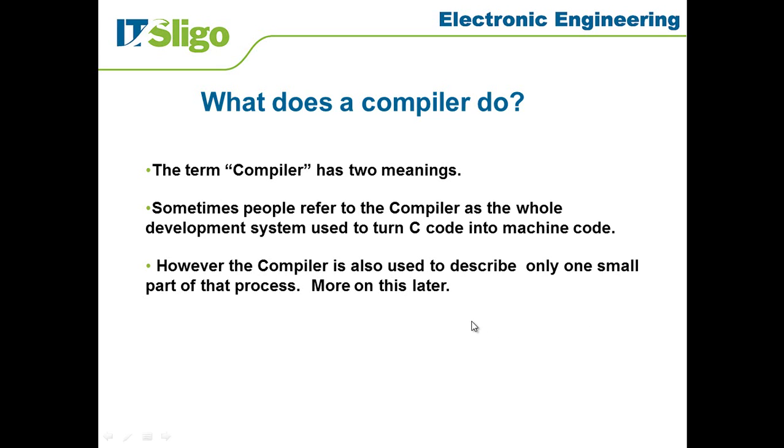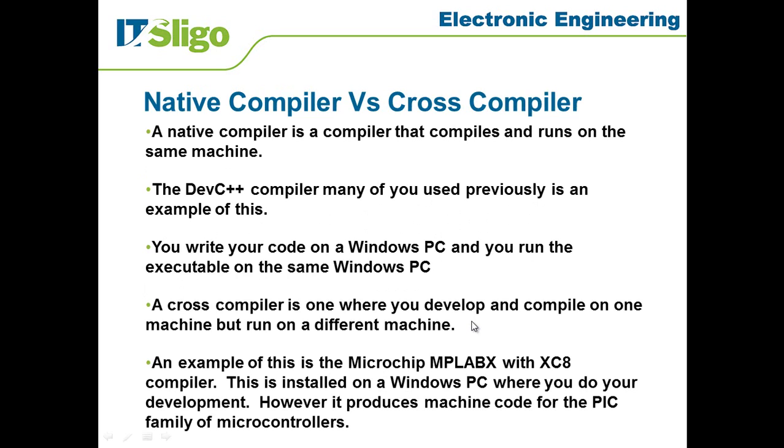This brings us to the two different types of compiler that you could come across: one is a native compiler and the other is a cross compiler. A native compiler is a compiler that compiles and runs on the same machine. You develop your program, compile it, and run it all on one type of machine. An example of that would be the DevC++ compiler that many of you used with me in a previous subject.